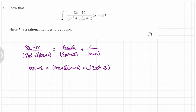Now we can eliminate the first bracket by letting x equal negative 1, which makes (Ax + B)(x + 1) equal zero. So when x = -1, we get -20 = 5C, which gives us C = -4.